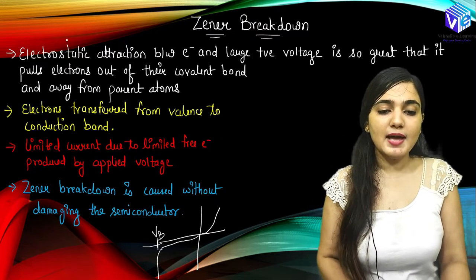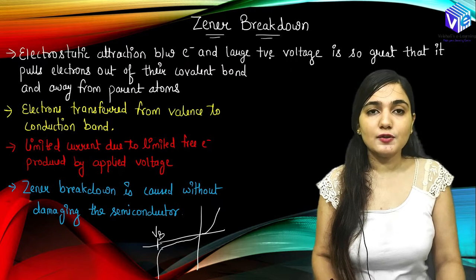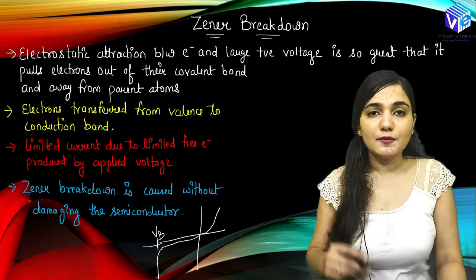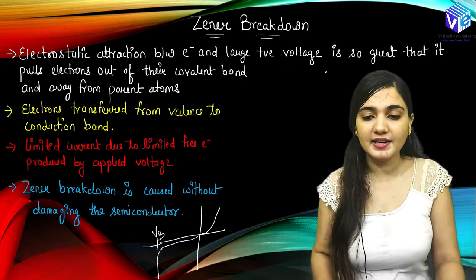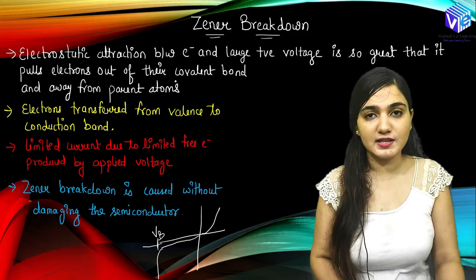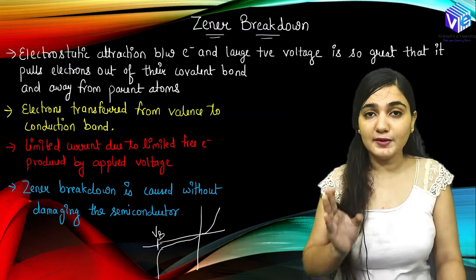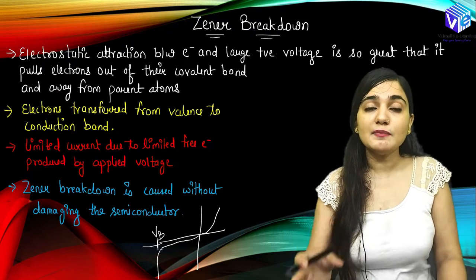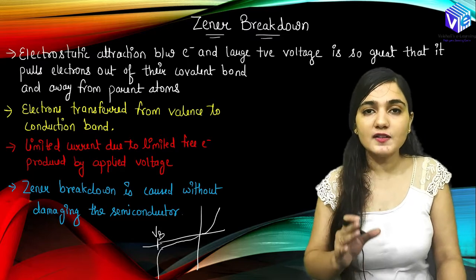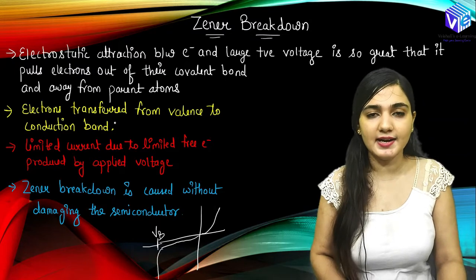Now in Zener breakdown, we have electrostatic attraction between the electron as well as the large positive voltage. So if we have a large positive voltage, electrons are going to attract towards it. When the electrons have very high attraction towards the positive voltage, it is going to pull electrons out of the covalent bond of the silicon as well. So we have some free electrons, but some electrons were also there in the covalent bond of silicon. When the electrons from the covalent bond go out because of the high voltage, this is going to cause the breakdown. Due to which, if we have more and more electrons, we will be having higher current in the circuit.